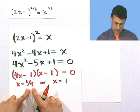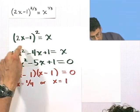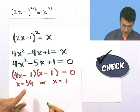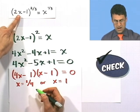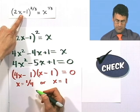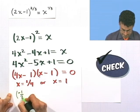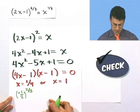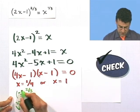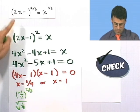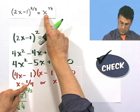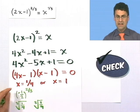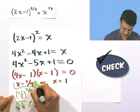Checking x equals 1/4: plugging into the original, 2 times 1/4 is 1/2, and 1/2 minus 1 is negative 1/2. So I have negative 1/2 raised to the 2/3 power — meaning I square it to get positive 1/4, then take the cube root of 1/4. On the right side, plugging 1/4 in gives 1/4 to the 1/3 power, which is also the cube root of 1/4. They're equal, so this checks. x equals 1/4 is a valid solution.